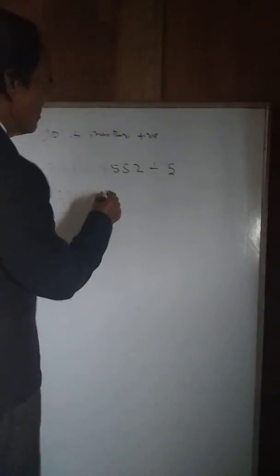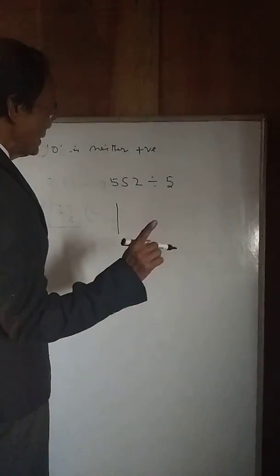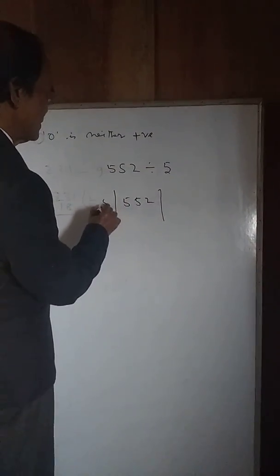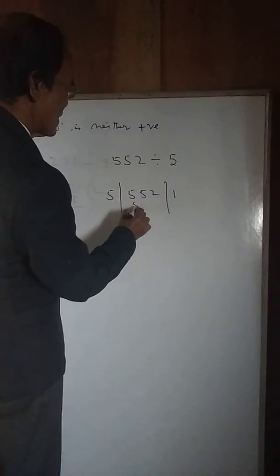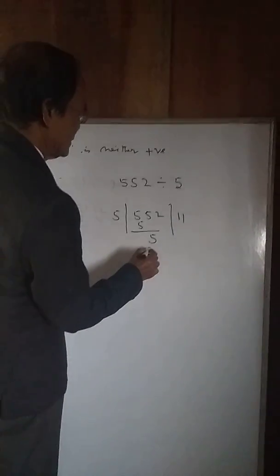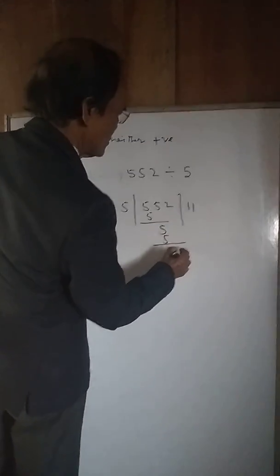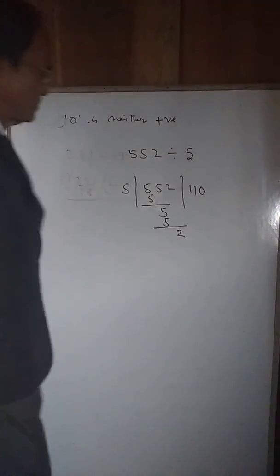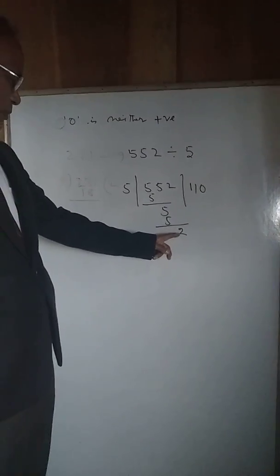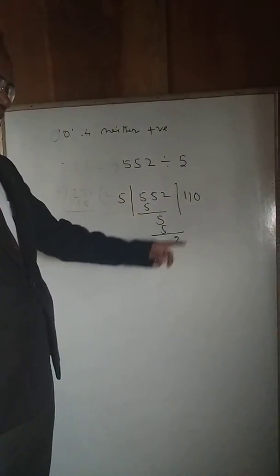552 divided by 5. Let us write by using Euclid division lemma here, like this: 5 goes into 55 first, then 2. Let us keep zero here. Let us discuss whether 2 is the remainder or not.